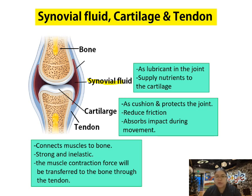Synovial fluid acts as a lubricant, just like lubricating oil, in the joint. It also supplies nutrients to the cartilage. With nutrients at the cartilage, movement becomes smoother. The cartilage acts as a cushion to protect your joint, reduce friction, and absorb impact during movement.